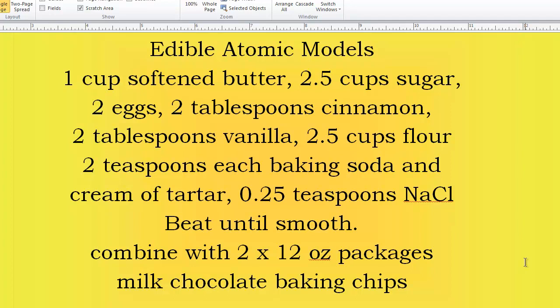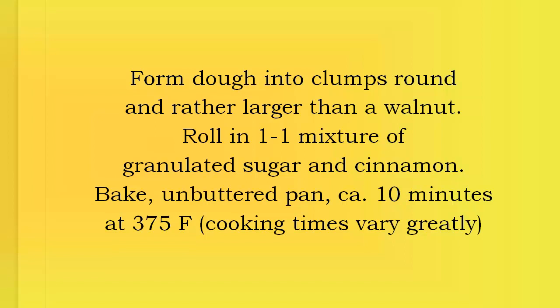1 cup softened butter, 2.5 cups sugar, 2 eggs, 2 tablespoons cinnamon, 2 tablespoons vanilla, 2.5 cups flour, 2 teaspoons each baking soda and cream of tartar, a quarter teaspoon or modestly less table salt — beat until smooth. Combine with 2 by 12-ounce packages of milk chocolate baking chips; put in the chips at the end or it's very hard to beat until smooth. Form dough into clumps, round and rather larger than a walnut. Roll in a one-to-one mixture of granulated sugar and cinnamon. A quarter cup should be more than enough to sprinkle on top before baking. Bake in an unbuttered pan for about 10 minutes at 375 Fahrenheit. Cooking times vary greatly — experiment until you get used to discovering what your stove does.